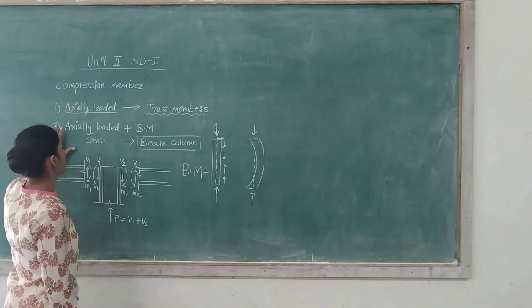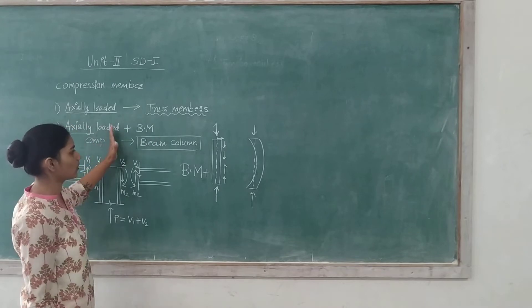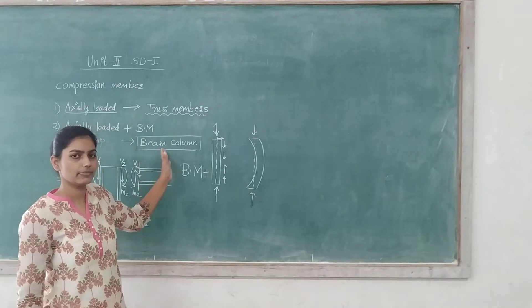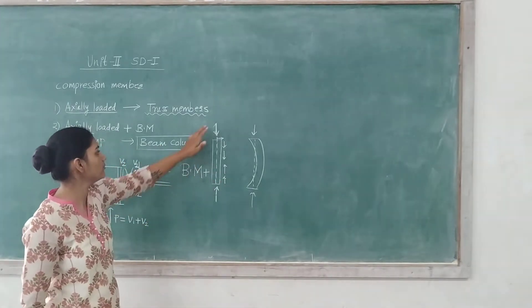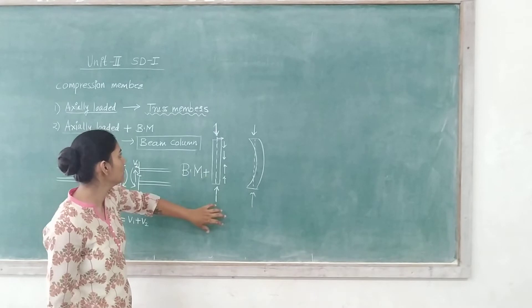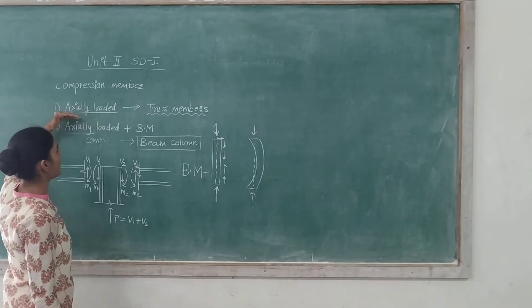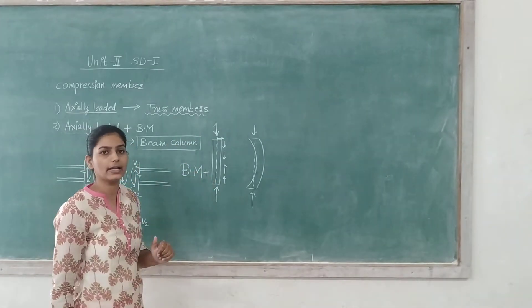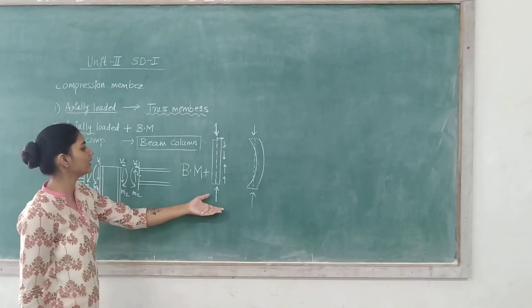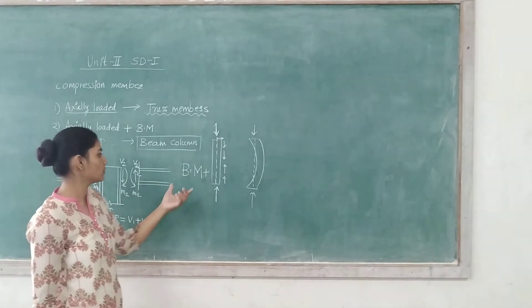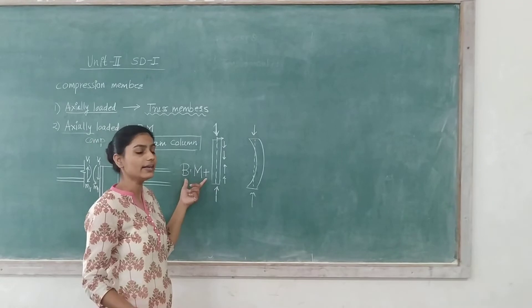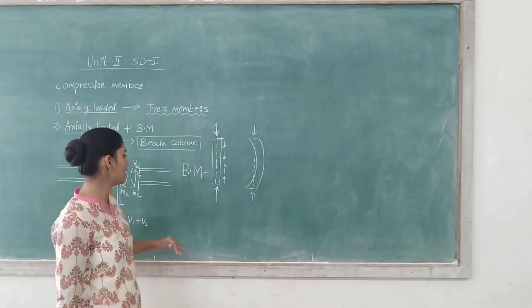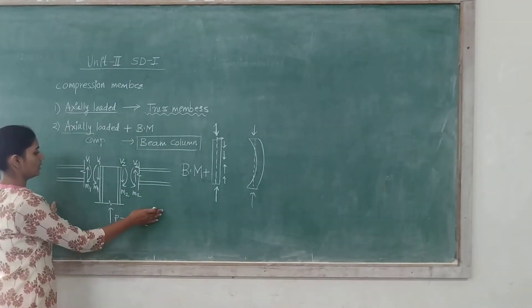I have given you an example here for an axially loaded compression member. All the truss members are axially loaded. And for axially loaded plus bending moment, the example is a beam-column connection or beam-column joint, which experiences axial compression combined with bending moment. This second type we will keep aside for now. Right now I am focusing on the first part where the compression member is axially loaded and all the compression forces are passing through the axis of that member.